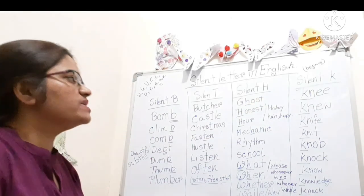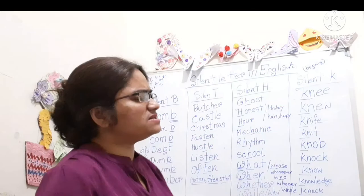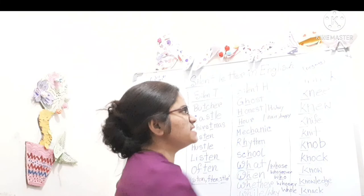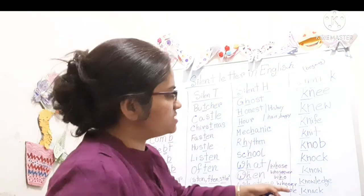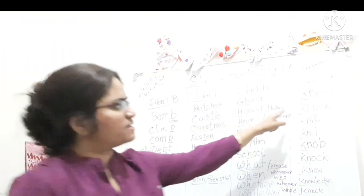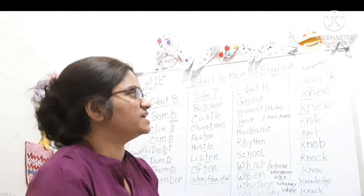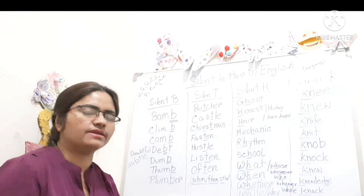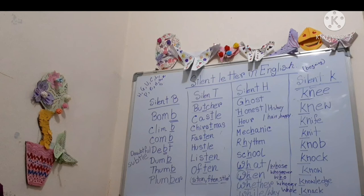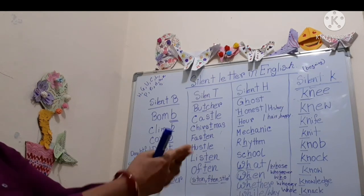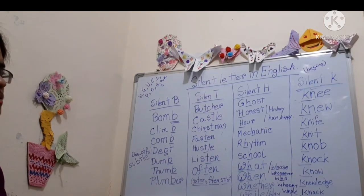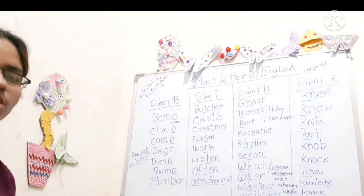Now, the last one is silent K. See, when K is sitting just beginning of the word and after K, N is there, in that case silent K is applicable. See, if you see properly, all the words K-N. So how we are pronouncing? K-N-E-E, knee. K-N-E-W, knew. K-N-I-F-E, knife. K-N-I-T, knit. K-N-O-B, knob. K-N-O-C-K, knock. Who is knocking on the door? Who is knocking? No, knock.